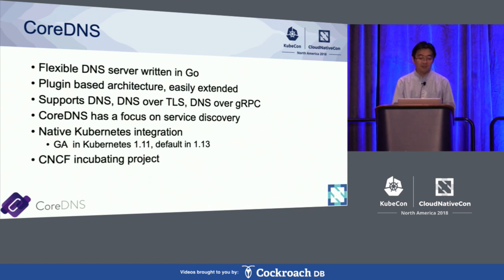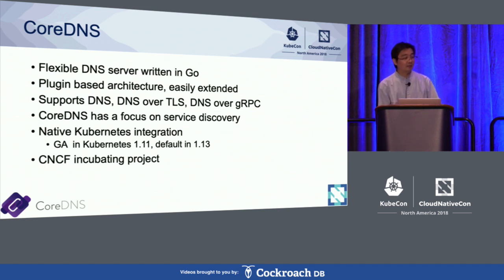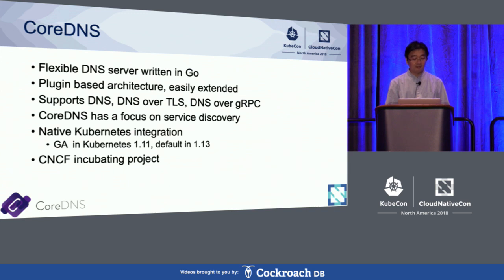CoreDNS is a flexible DNS server written in Go. It has a plugin-based architecture, which means it could easily be extended for customized plugins with new functionalities. CoreDNS supports DNS, DNS over DoS, and DNS over gRPC. One note for DNS over gRPC is that DNS over gRPC itself is a custom implementation by CoreDNS, and it's not the DNS standard.